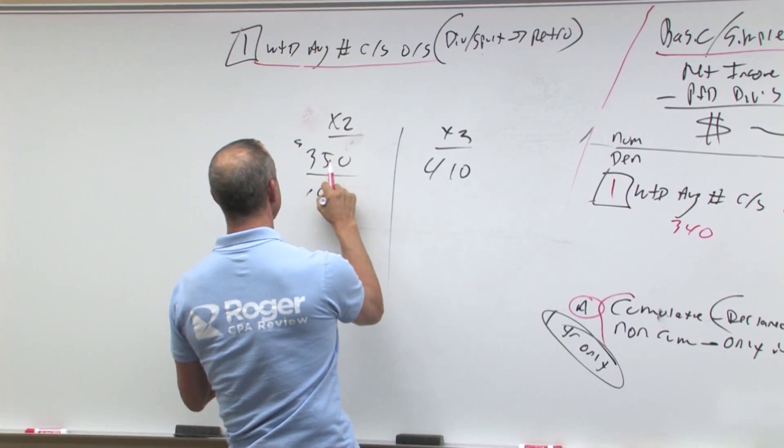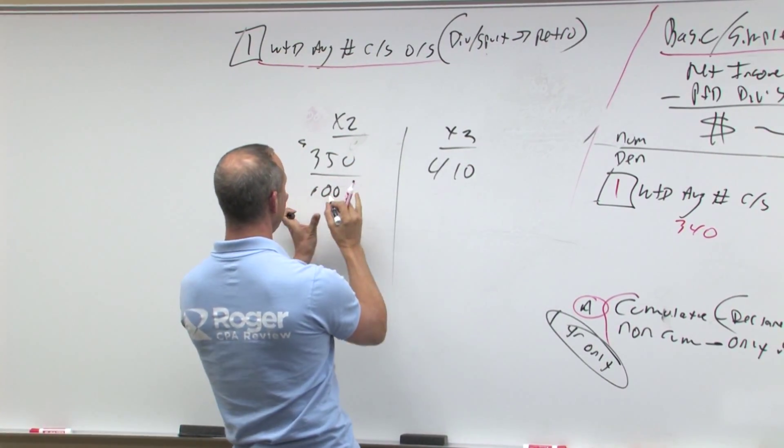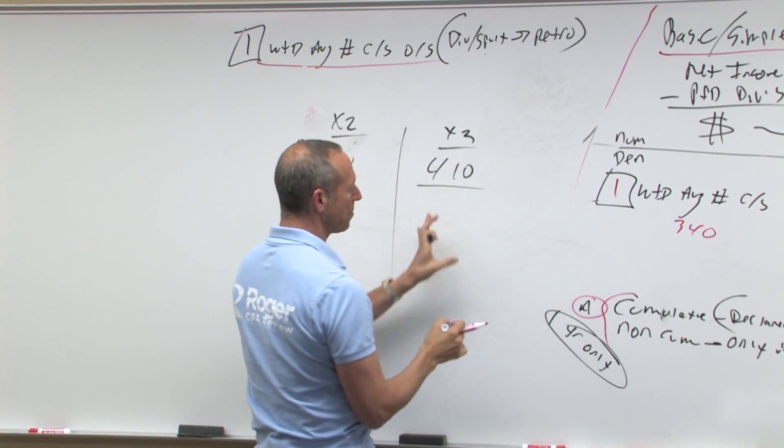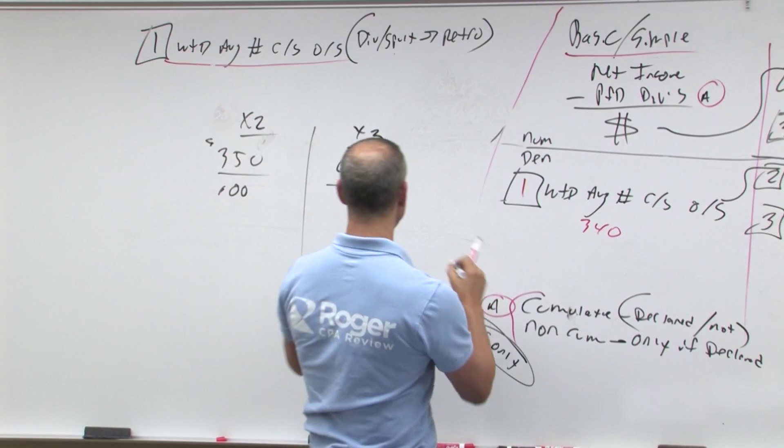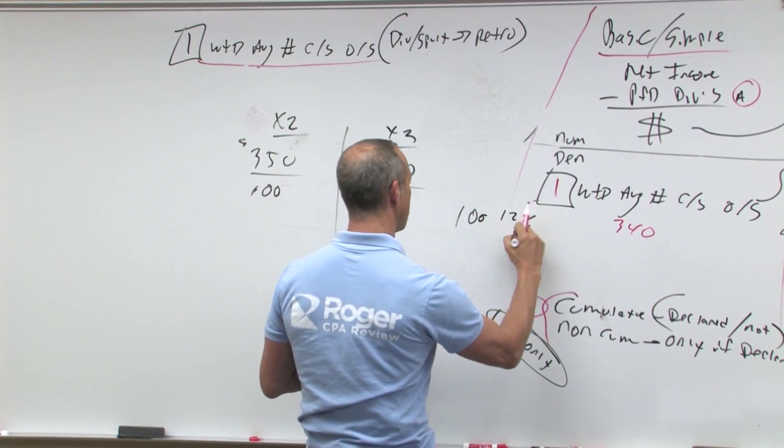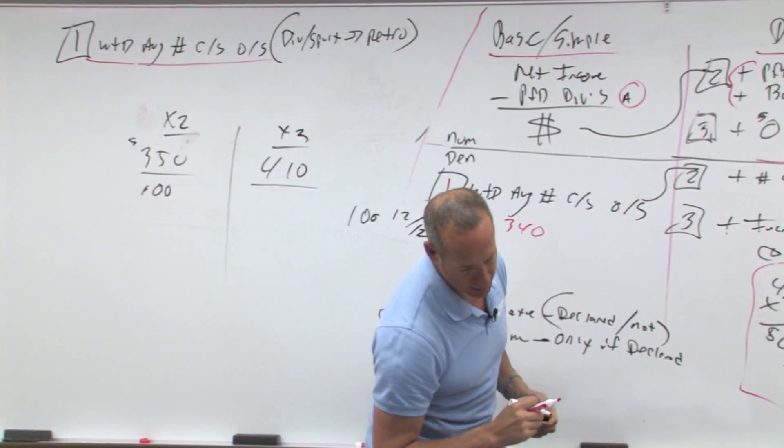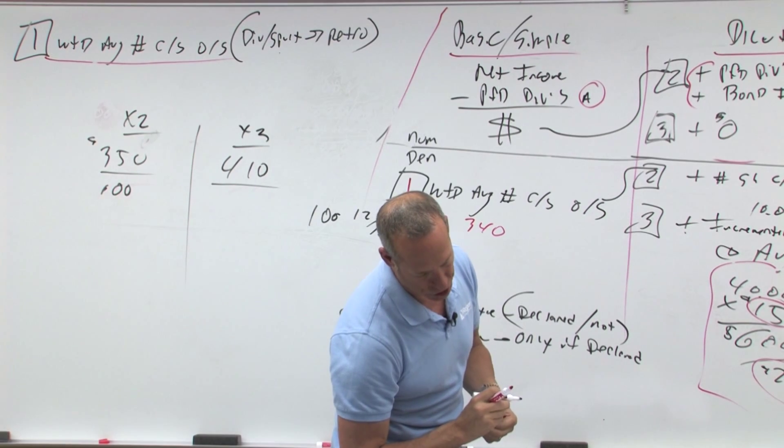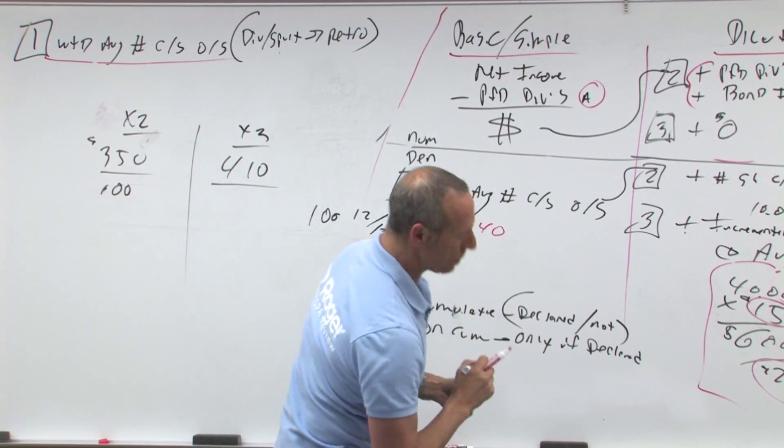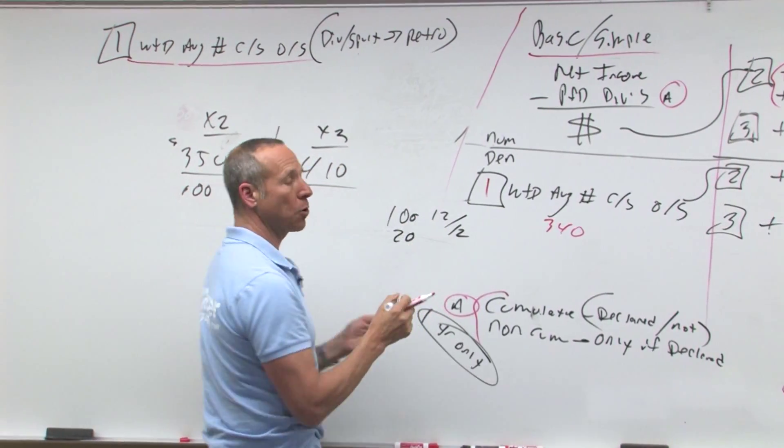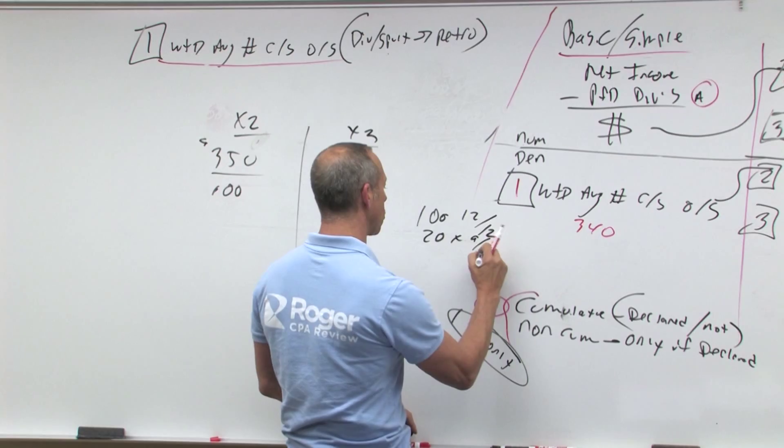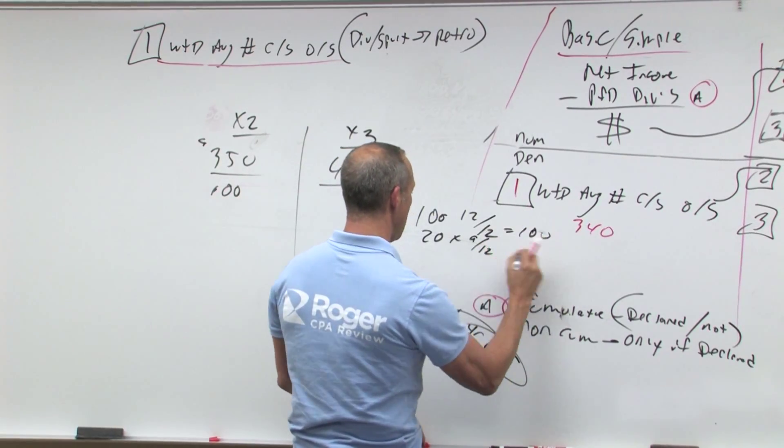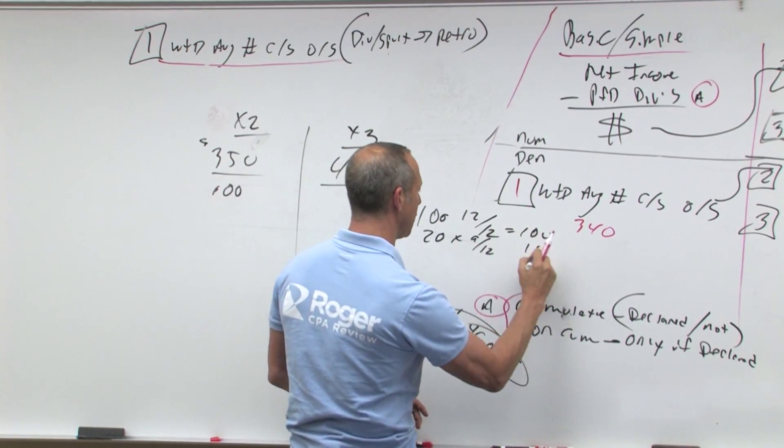It said we had 100,000 shares outstanding here, so that's 350. Here we have to figure it out. We had 100,000 shares outstanding for the whole year, that's 12 twelfths. Then on April 1st we issued 20,000 shares. So that means we have 20,000 shares April, that's January, February, March. So they're outstanding for nine twelfths of the year, so that's 100 plus nine twelfths is three quarters is 15.